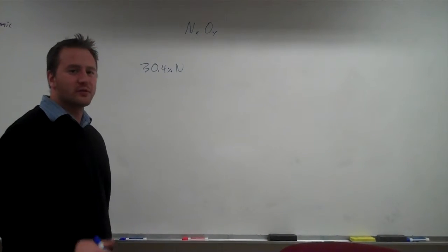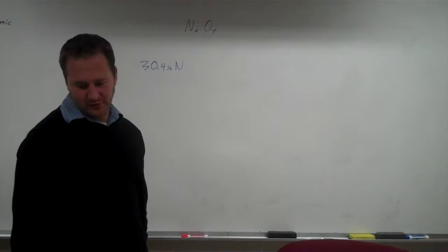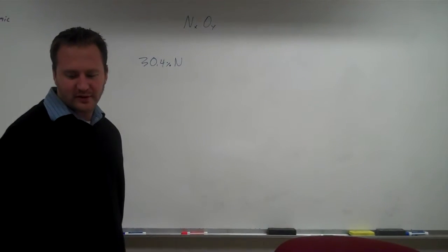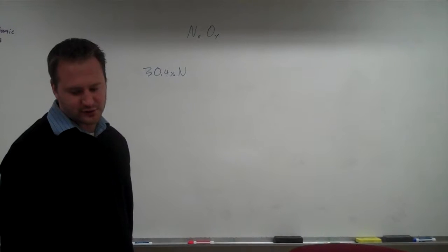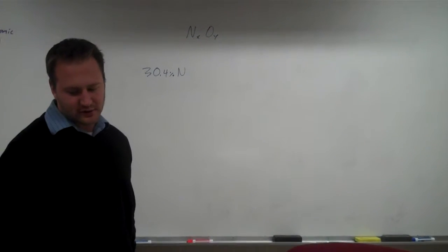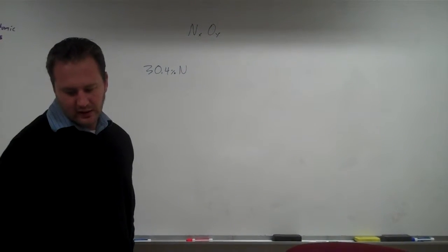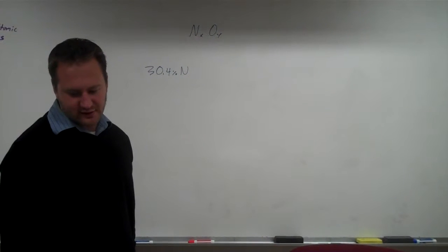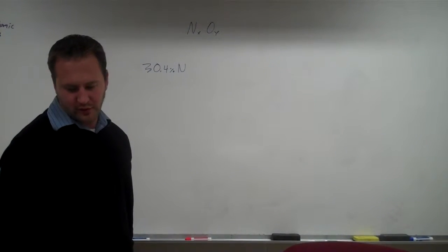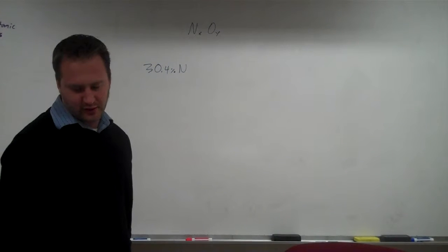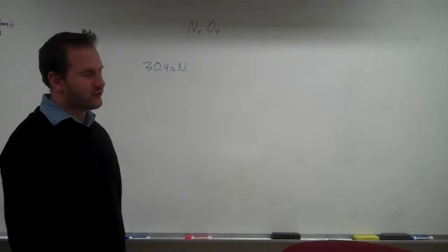We're going to do a sample problem from the book, number 67. A compound that contains only nitrogen and oxygen is 30.4% nitrogen by mass, and the molar mass of this compound is 92 grams per mole. What is the empirical formula of this compound, and what is the molecular formula?